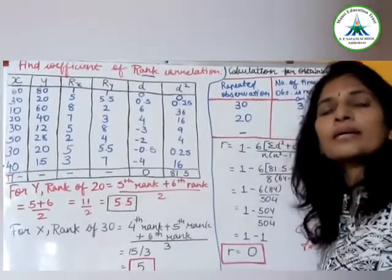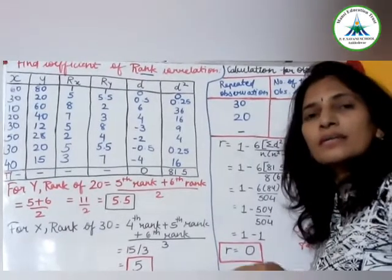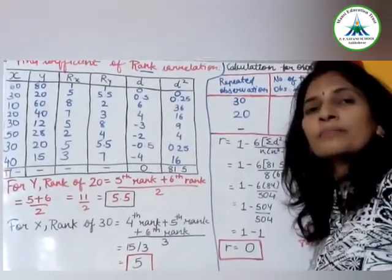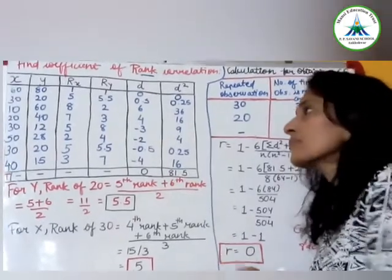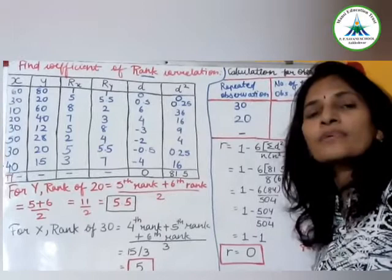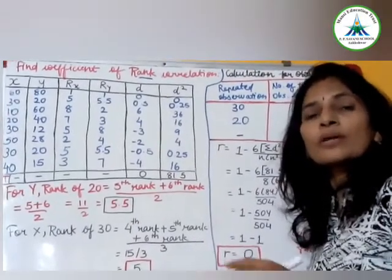Last lecture, I completed ranking correlation. But in this lecture, the difference is that here the observations are repeated. So how do we rank the repeated observations?